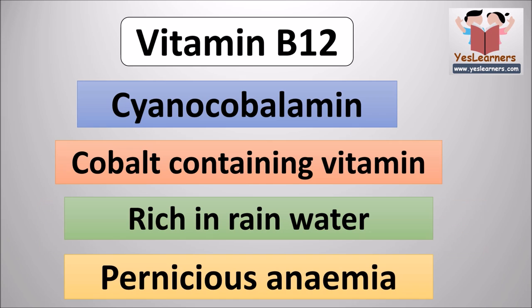The scientific name of vitamin B12 is cyanocobalamin. The cobalt-containing vitamin is vitamin B12. Vitamin B12 is rich in rainwater. The disease caused due to the deficiency of vitamin B12 is pernicious anemia.